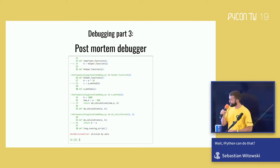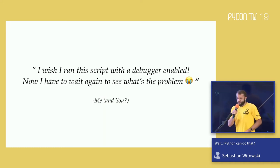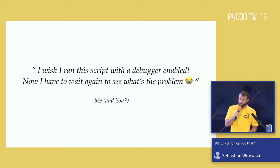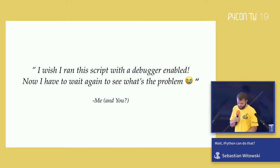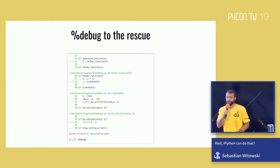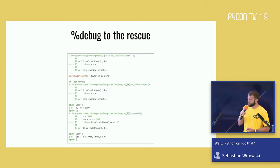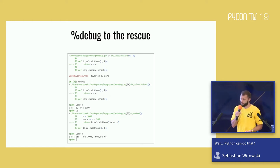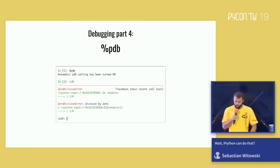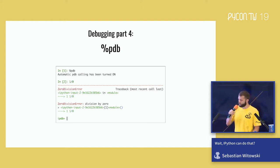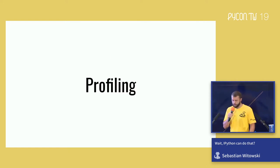Now my favorite part of IPython: the post-mortem debugger. Imagine you're running a long-running Python script and suddenly it crashes. You're thinking, 'I wish I had run this with a debugger — now I have to enable it, rerun the script, and wait again.' Well, when you're using IPython you don't have to. You can run the `%debug` magic after the exception happened and it will start the debugger for the last exception. You can inspect variables and move up and down the stack trace. Finally, if you want to automatically start the debugger when any exception happens, there's a magic function called `%pdb` to enable that behavior.